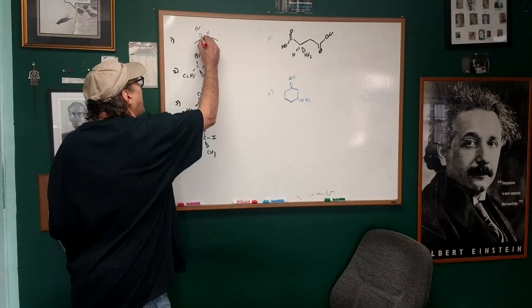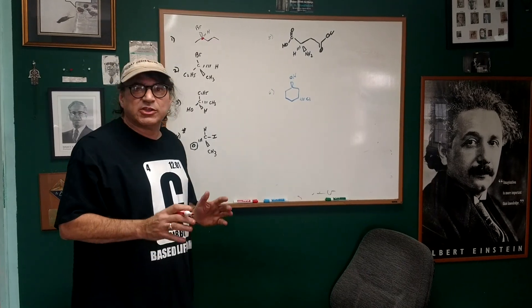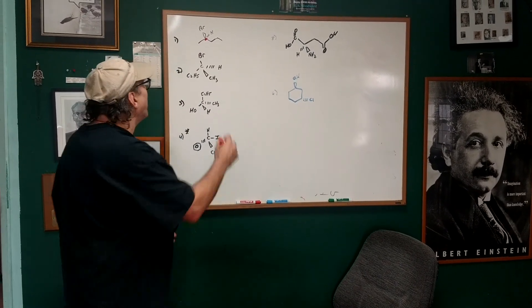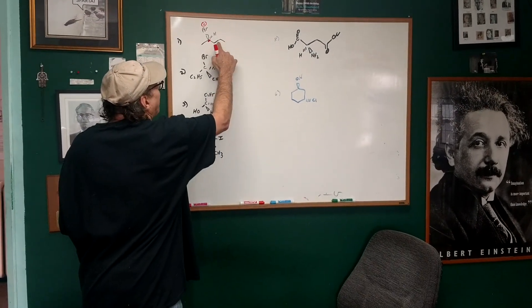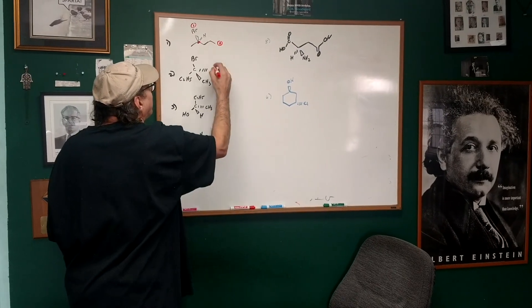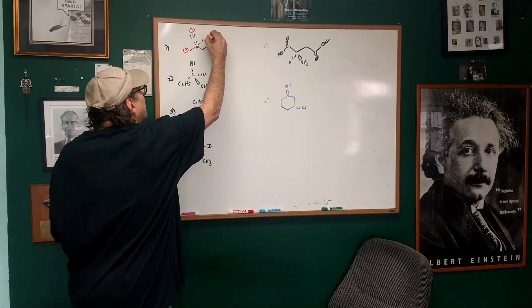As you can see from here, we have a chiral carbon right here, so I'll put a little dot. What I want to do is assign what we call the group priorities based on the atomic number. So the bromine is group number one, the propyl group is priority number two, the methyl is number three, and the hydrogen is number four.